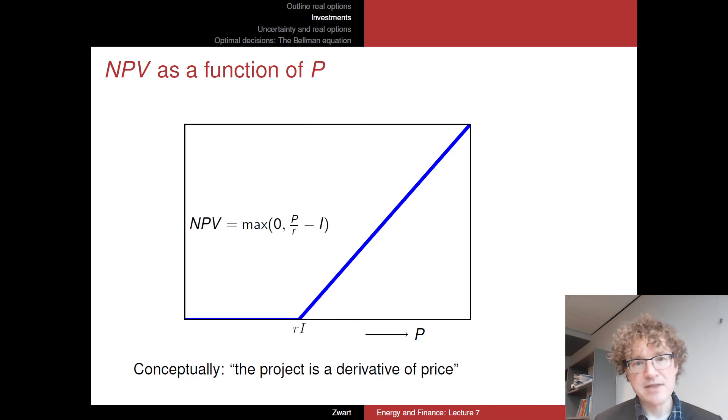So conceptually, you can think of this project that we're looking at as an option, or as a derivative, if you wish, a derivative of some underlying variable, and this underlying variable here is this price. The P which is moving up and down just like the stock price might be moving up and down in this financial analogy. So the project here is, you can see this as a derivative of financial, a real financial derivative of price.